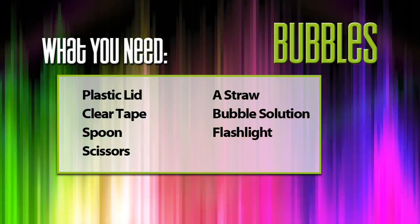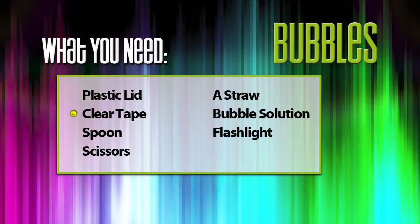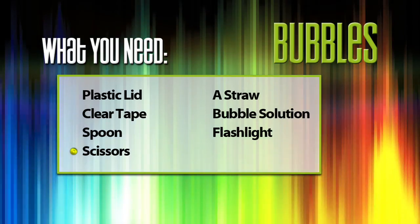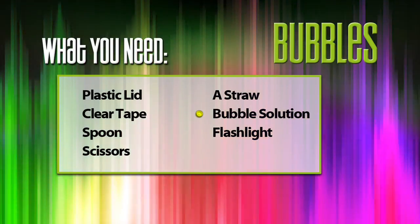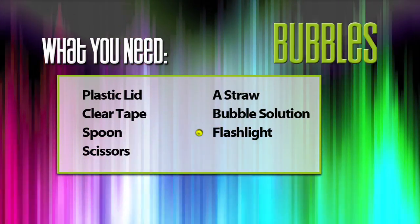To see the different colors in light, you'll need a plastic lid, clear tape, a spoon, scissors, a straw, bubble solution, which is just water and dish soap, and a flashlight.